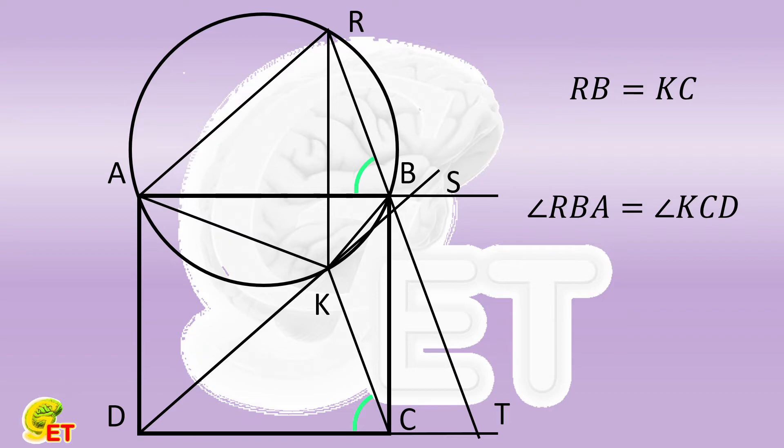Then, according to the parallelism of the opposite sides of the rectangle, we obtain that angle RBA is equal to angle RTD. So angle KCD is equal to angle RTD. Therefore RB is also parallel to KC. Putting the two conditions together, we get that RBCK is a parallelogram.